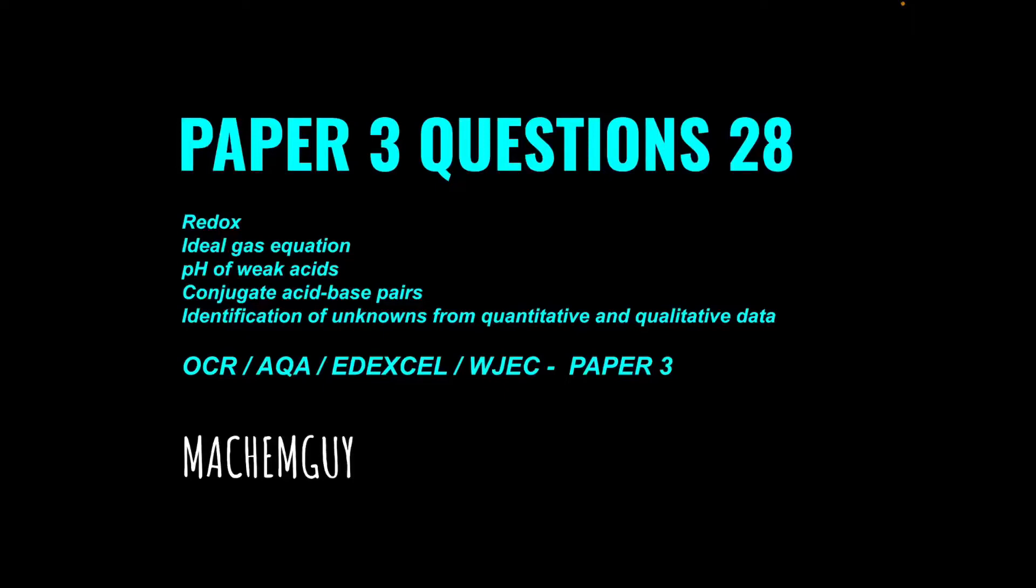I've got another question for the paper three questions playlist. This one's about redox, ideal gas equation, pH of weak acids, conjugate acid-base pairs, and the identification of unknowns from quantitative and qualitative data. As always, I'll link to the questions in the description if you want to try it first.